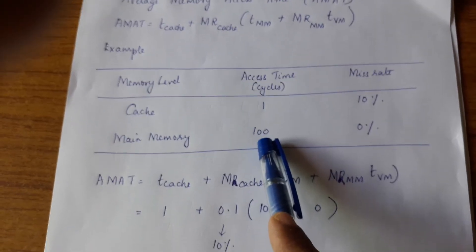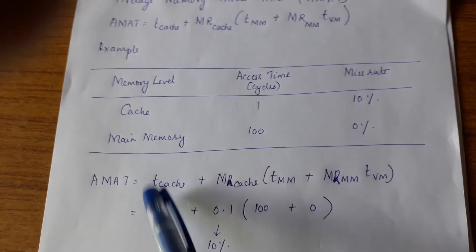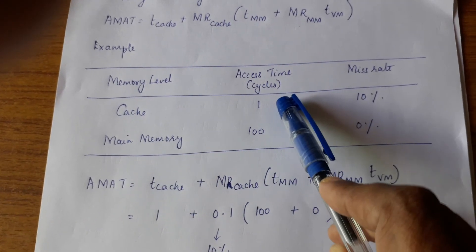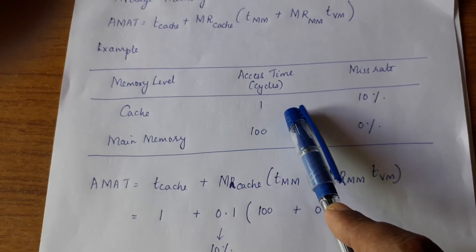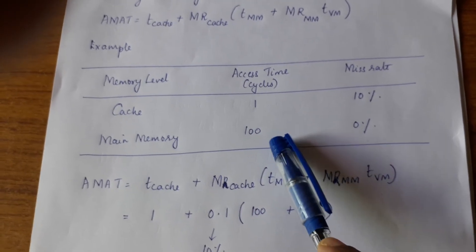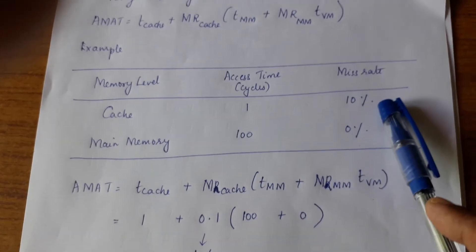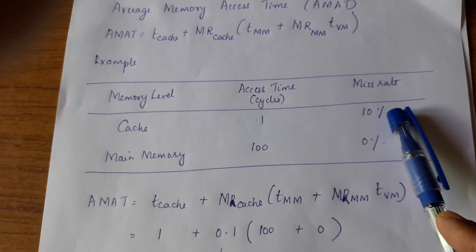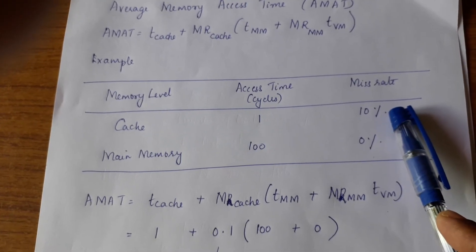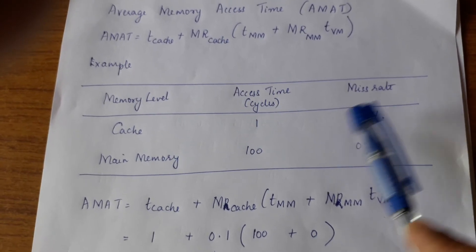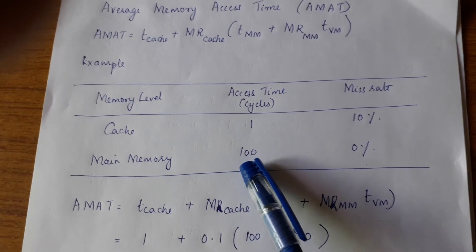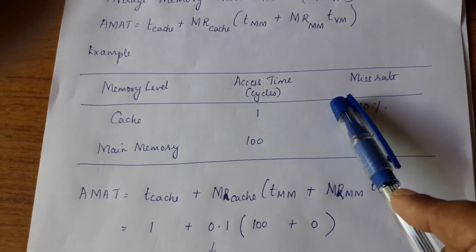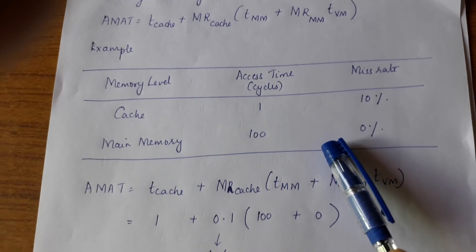To understand this, let us take a simple example where only two levels of memory are considered — we are not considering the hard disk. We have cache and main memory. The access time of the cache is 1 clock cycle, and 100 clock cycles to access the main memory. The miss rate is 10%, meaning 90 times out of 100 I will get the data in the cache, but 10 times I will not and must go to the main memory. Since there is no next level, the miss rate of the main memory is 0% — meaning if I do not find it in the cache, I will definitely find it in the main memory.